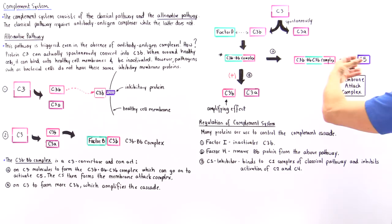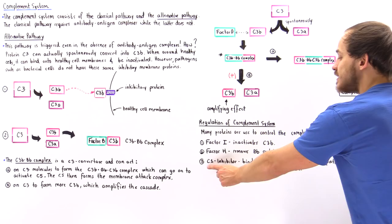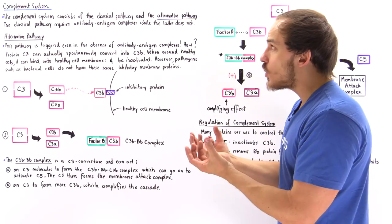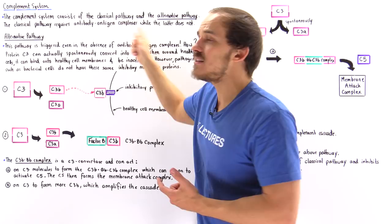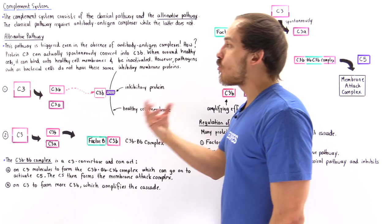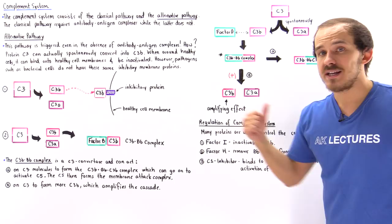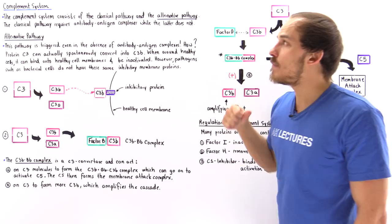Finally, we also have another important agent that plays a role in the classical pathway: the C1 inhibitor. The C1 is the initial protein activated by the antibody-antigen complex in the classical pathway. The C1 inhibitor binds to that C1 complex and inhibits the activation of C2 and C4, so the C4b-C2b complex cannot form, and we cannot activate C3. These proteins, as well as many others, are commonly used to down-regulate and control our complement system, because we don't always want it to be activated.